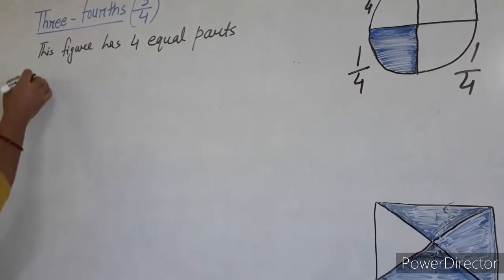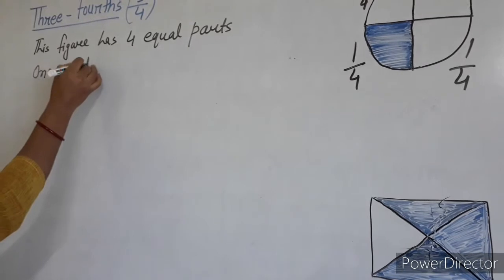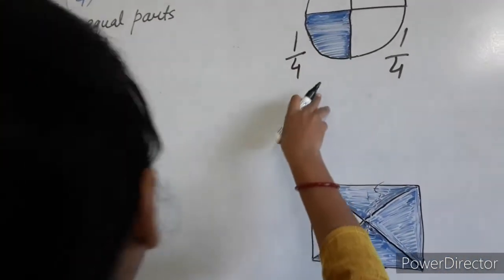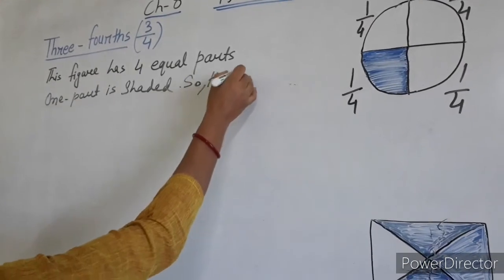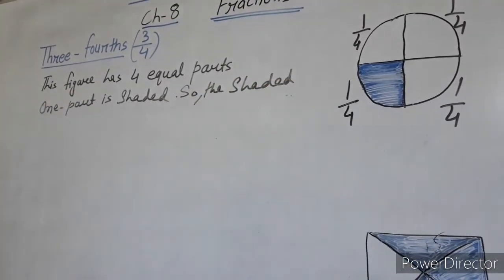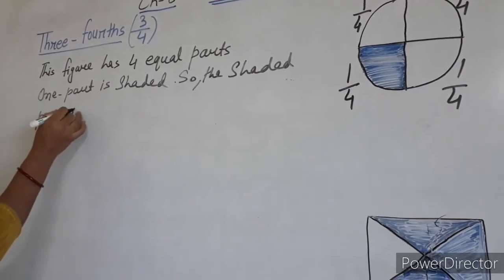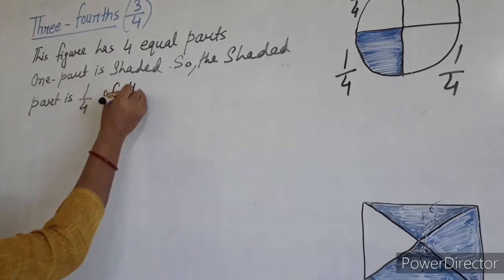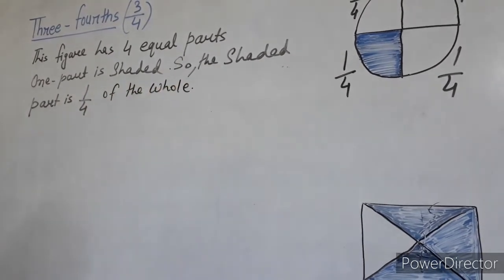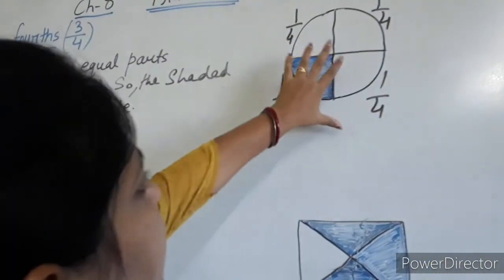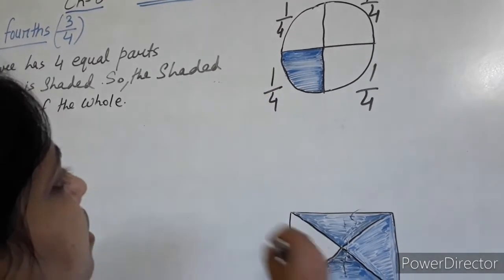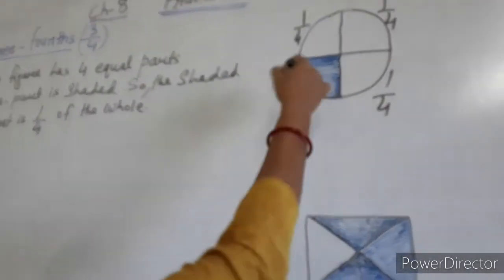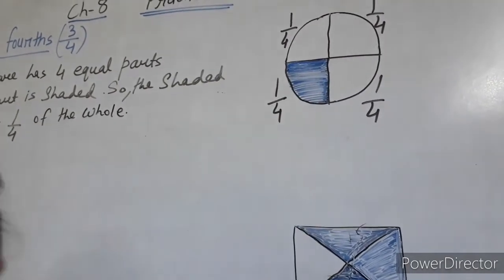Then among them 1 part is shaded. This 1 part is shaded. So the shaded part is 1 by 4th of the whole. The 4 parts are there and 1 part is shaded. This shaded part is 1 by 4th of the whole picture, the circle. This is 1 part of the whole. So 1 by 4th.